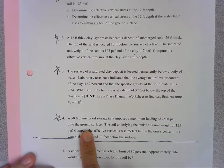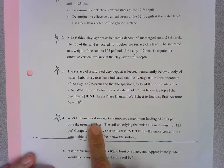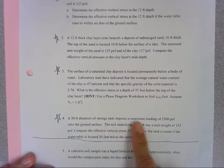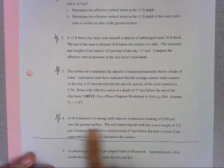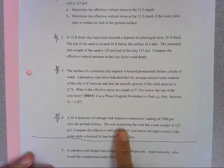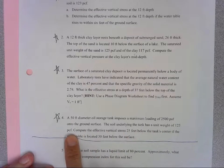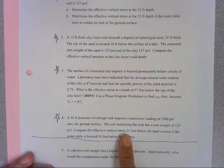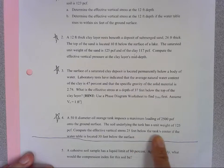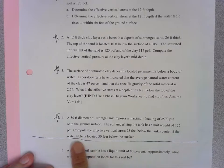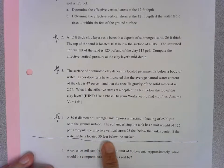Our last problem for this week is a 50-foot diameter oil storage tank imposes a maximum loading of 2,500 pounds per square foot onto the ground surface. The soil underlying the tank has a unit weight of 125 pounds per cubic foot. We want to compute the effective vertical stress 25 feet below the tank center if the water table is located 30 feet below the surface.